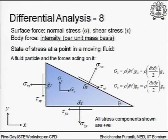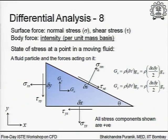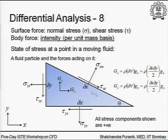Sigma_xx acts in the minus x-direction; tau_yx also acts in the minus x-direction. The body force g_x is assumed acting in the positive x-direction. We also need to resolve sigma_nn and tau_nt — the normal and shear stresses on the slanted surface — into x and y components, and include them in the summation, in terms of the angle theta and geometrical parameters delta x, delta y, and delta s.